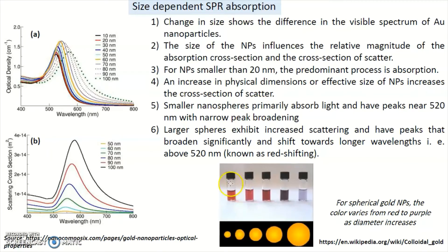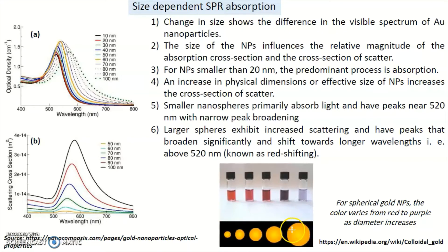But an increase in physical dimension or effective size of nanoparticles increases the scattering cross-section. If you take a very small nanoparticle and compare it to a bigger nanoparticle, scattering is higher in the case of bigger nanoparticles. The scattering cross-section is higher for larger particles.